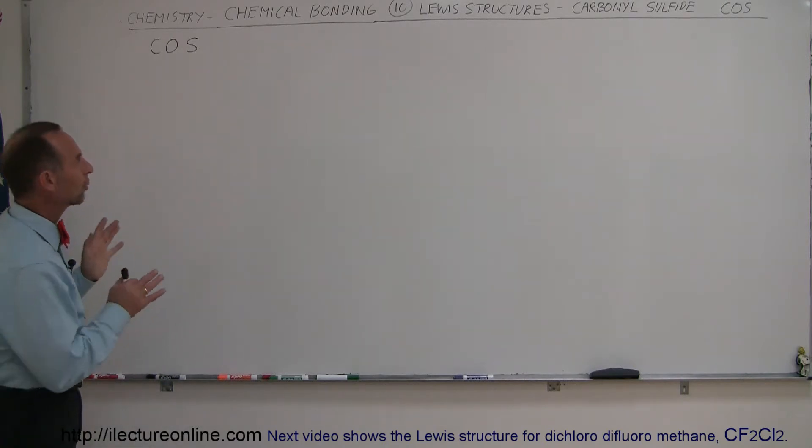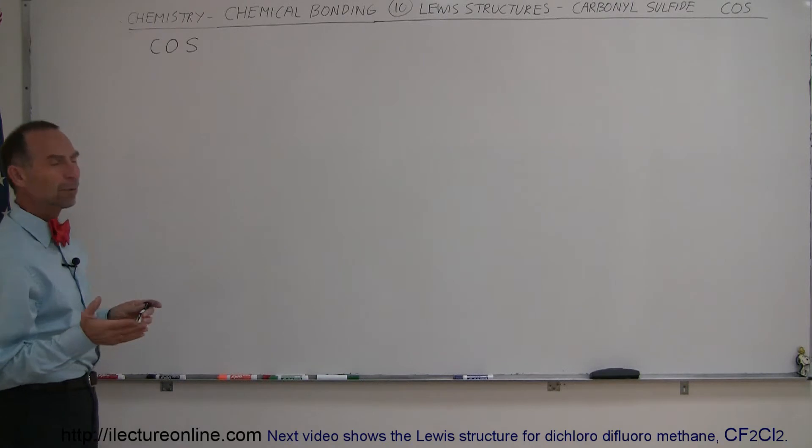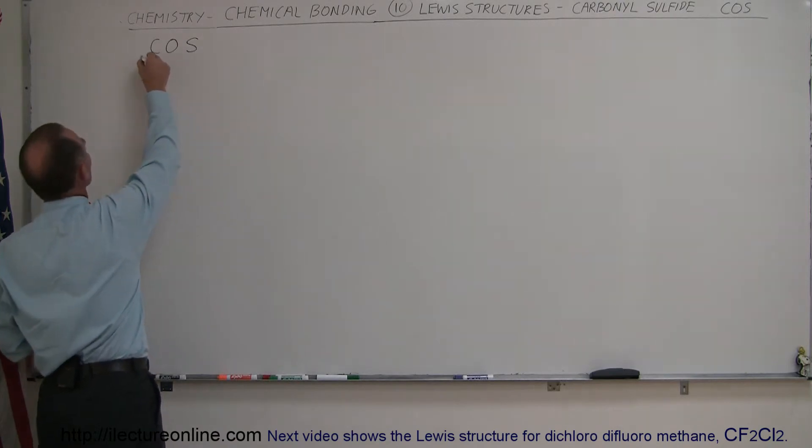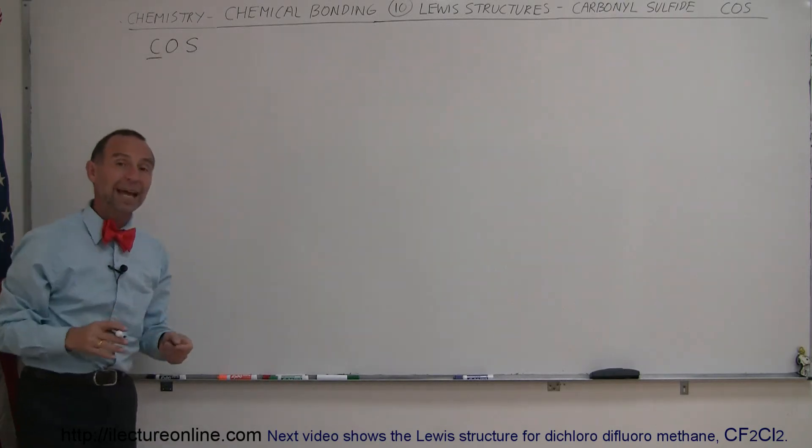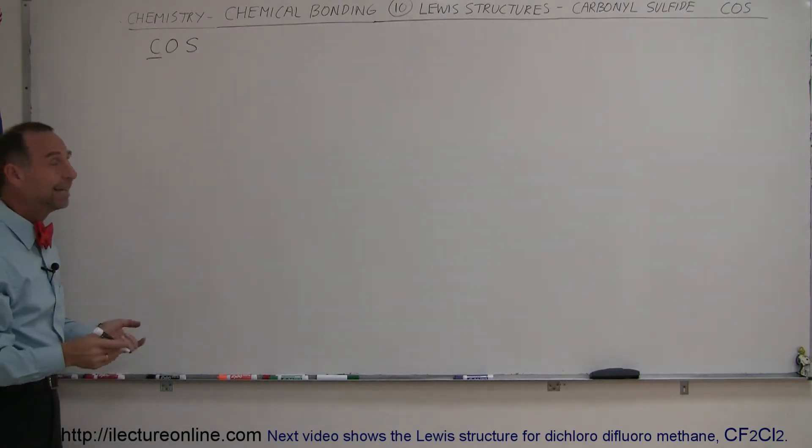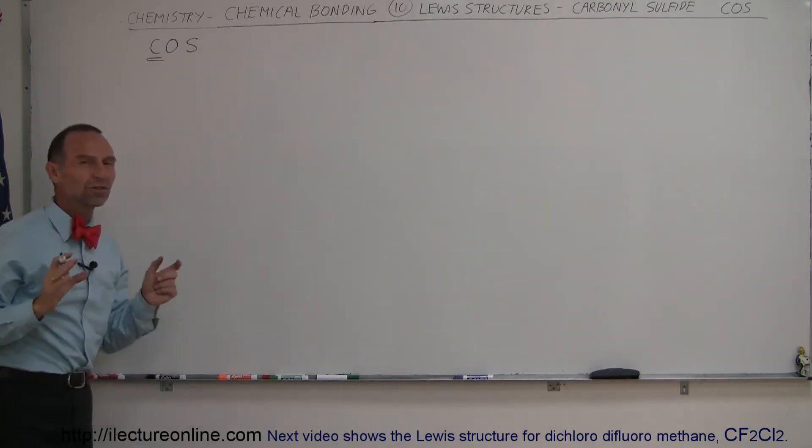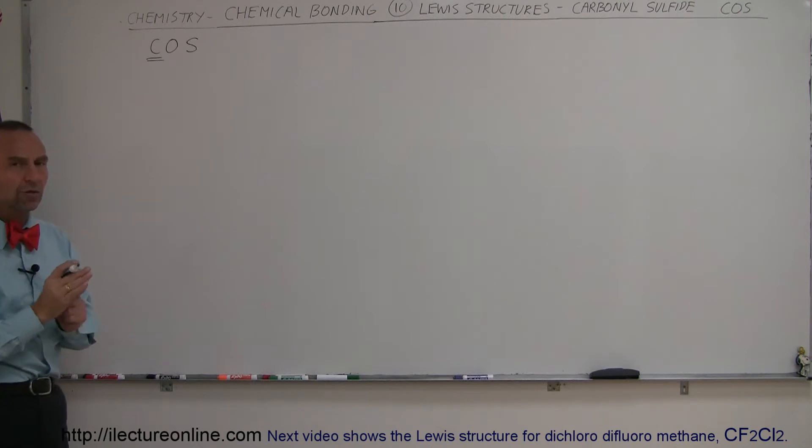I put them in such a way that we're not quite sure which one will go in the middle, which one will go on the sides, but right away we follow our rules. Which one has the lowest electronegativity of those three? It would have to be carbon. And which of those three has the lowest number of valence electrons? Again, it would be carbon. So carbon is the atom which is most likely going to be the central structure of this molecule.